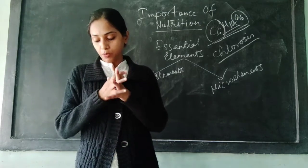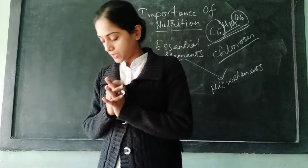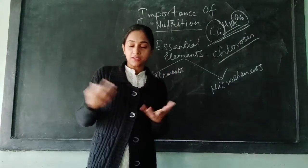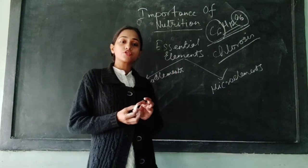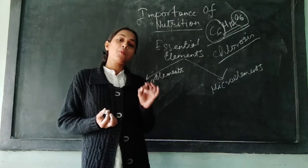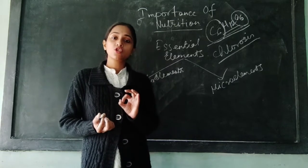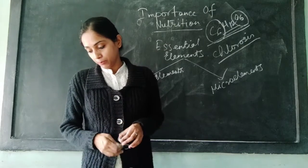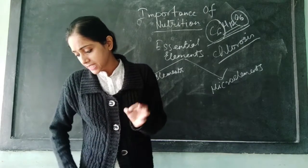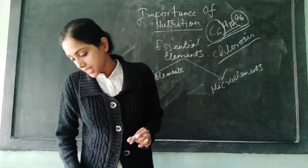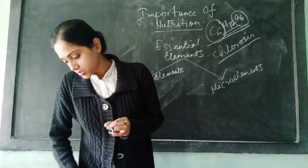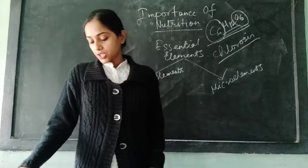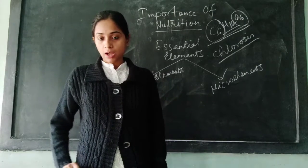Next, magnesium. It is an important part of protein synthesis. The most important function of magnesium is that it is an essential component of chlorophyll, so it is very important. Its deficiency leads to reduced chlorophyll and the leaves become brittle.